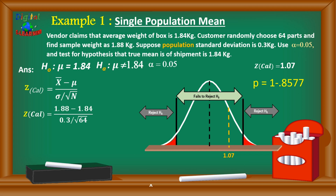Since the z-table gives the area to the left, p equals 1 minus 0.8577, and since the normal distribution is symmetrical the area to the right equals that of the left. We get p as 0.1423. Since p (0.1423) is greater than alpha (0.05), we fail to reject the null hypothesis. This is how we evaluate results based on the p-value.